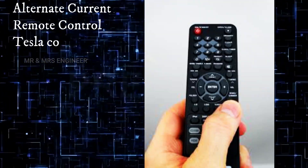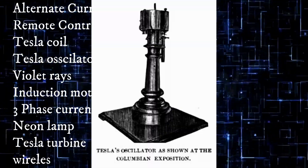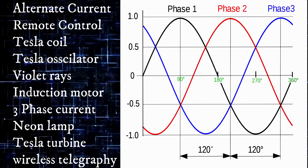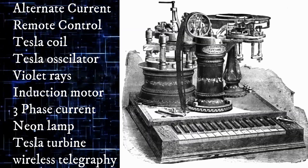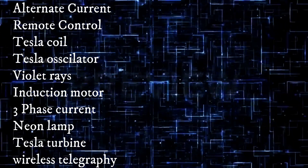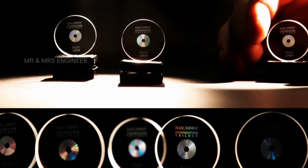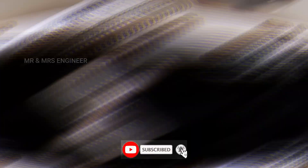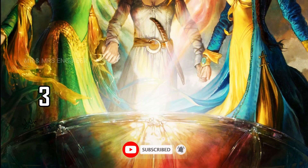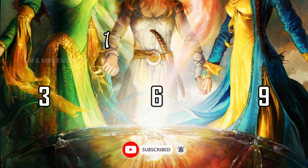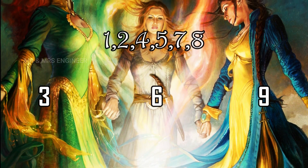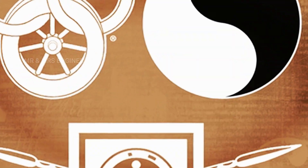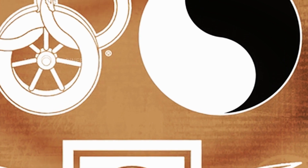Remote Control, Tesla Coil, Tesla Oscillator, Violet Race, 3 Phase Current, Induction Motor, Neon Lamp, Wireless Telegraph — they said they are all cut off of this, all cut off of the hair. We will tell you how we have to learn this. Now we will tell you this: these three sections are cut off.